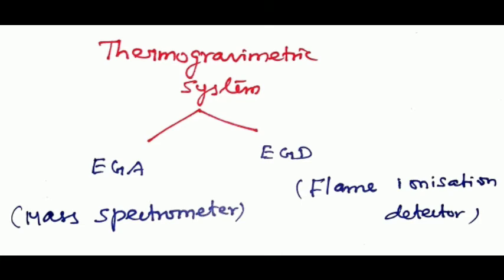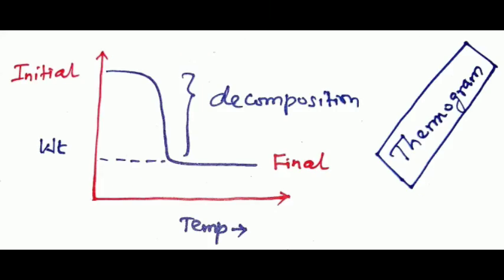In thermogravimetric analysis, the sample, usually a few milligrams in weight, is heated at a constant rate in the range of 1 to 20 degrees Celsius per minute. A thermogram shows weight change versus temperature or time. Temperature, initial and final, depends on variables such as heating rate, nature of the solid, and the atmosphere of the sample.